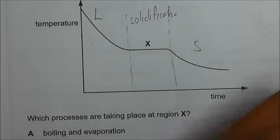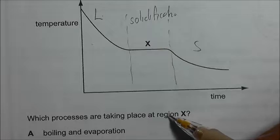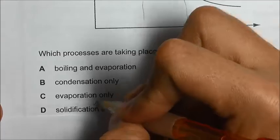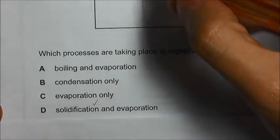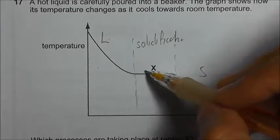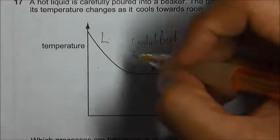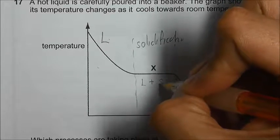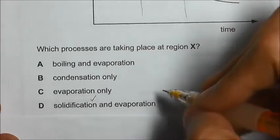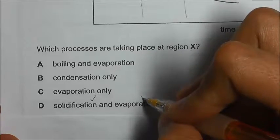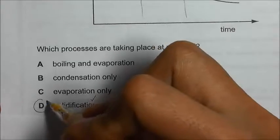So we look at the question, which processes are taking place at region X? So we know that solidification is taking place and it's a liquid at this region and at region X, it is a state of mixture of liquid plus solid. So it is still partially liquid and evaporation will take place all the time when a substance is in liquid form. So it also happens. The answer should be D.